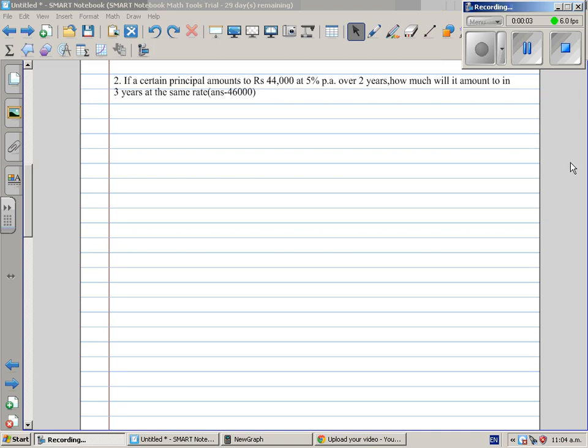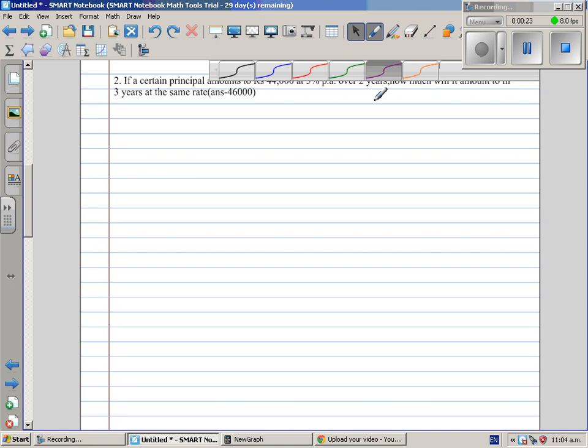Now this is again a problem sent to me by a student called Caesar, and again this is a problem on simple interest. If a certain principle amounts to 44,000 at 5% per annum simple interest over 2 years, how much will it amount to in 3 years at the same rate? So basically let's write what is given first.